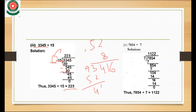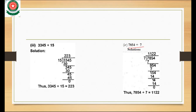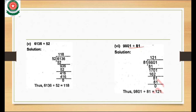Now part 6: 9801 divided by 81. We place 9801 inside and 81 outside the division form. We multiply 81 times 1 which is 81. Subtracting 98 minus 81: 8 minus 1 is 7 and 9 minus 8 is 1, so 17 comes. We bring down 0, making 170.